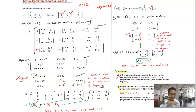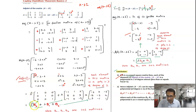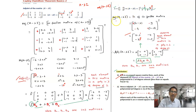Furthermore, the adjoint of (A minus lambda I) can be written as a matrix polynomial by taking powers of lambda common and writing the coefficients as matrices. For a 3 by 3 matrix this gives a degree-2 matrix polynomial with coefficient matrices B0, B1, B2 — which are 3 by 3 matrices. For a 2 by 2 matrix it is a degree-1 polynomial with 2 by 2 coefficient matrices.